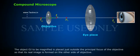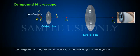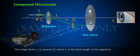Working: The object OJ to be magnified is placed just outside the principal focus of the objective so that its real image is formed on the other side of the objective. The image forms I₁G₁ beyond 2F₀ where F₀ is the focal length of the objective.